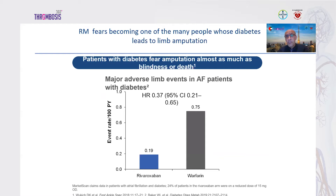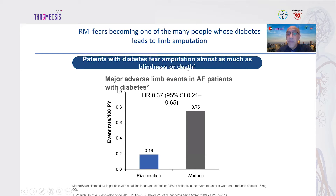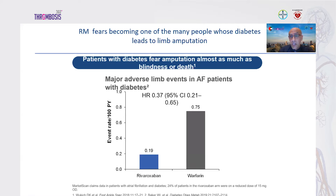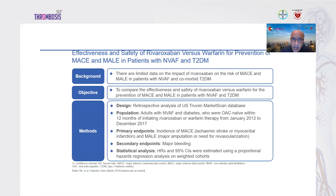Real-world data confirms the effectiveness and safety of rivaroxaban versus warfarin for prevention of MACE and MALE in patients with non-valvular AF and type 2 diabetes. MACE includes ischemic stroke or myocardial infarction; MALE includes major amputation, revascularization, and minor limb amputation. Rivaroxaban was associated with significant reduction in MACE — mainly ischemic stroke and MI — and major limb events including amputation and surgical or endovascular revascularization, confirming Phase 3 trial findings.